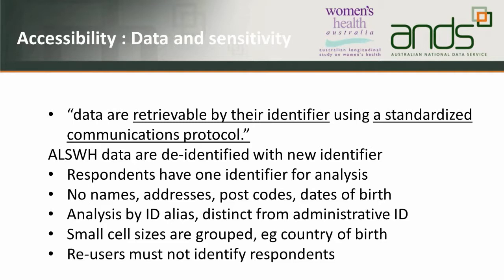We say the data is de-identified because there are no personal names, no addresses, no postcodes, no dates of birth — although year and month of birth are given for age analysis. Any other data deemed identifiable is stripped off. The identifier is called the ID alias — it's not the administrative ID that a respondent or office staff would see; they have a different administrative ID. Any small cell sizes we think are identifiable are grouped into larger groups — for example, country of birth is grouped into broad continental geographical areas.